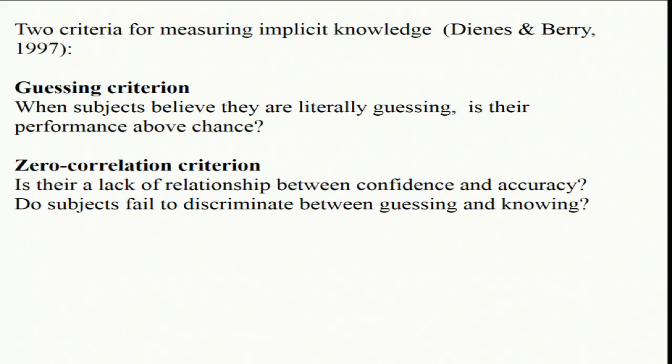How could we tell whether knowledge was conscious or unconscious? One thing we could do — like with blindsight — is ask people to say whether they thought they were guessing when they made a judgement, or if they had some confidence. If you took all the cases where the person says 'I think I'm completely guessing, I know nothing,' but you show that they know something, that would be a sort of unconscious knowledge. They've got knowledge, but they're not aware that they're aware they have it. So from a higher-order perspective, it's unconscious knowledge.